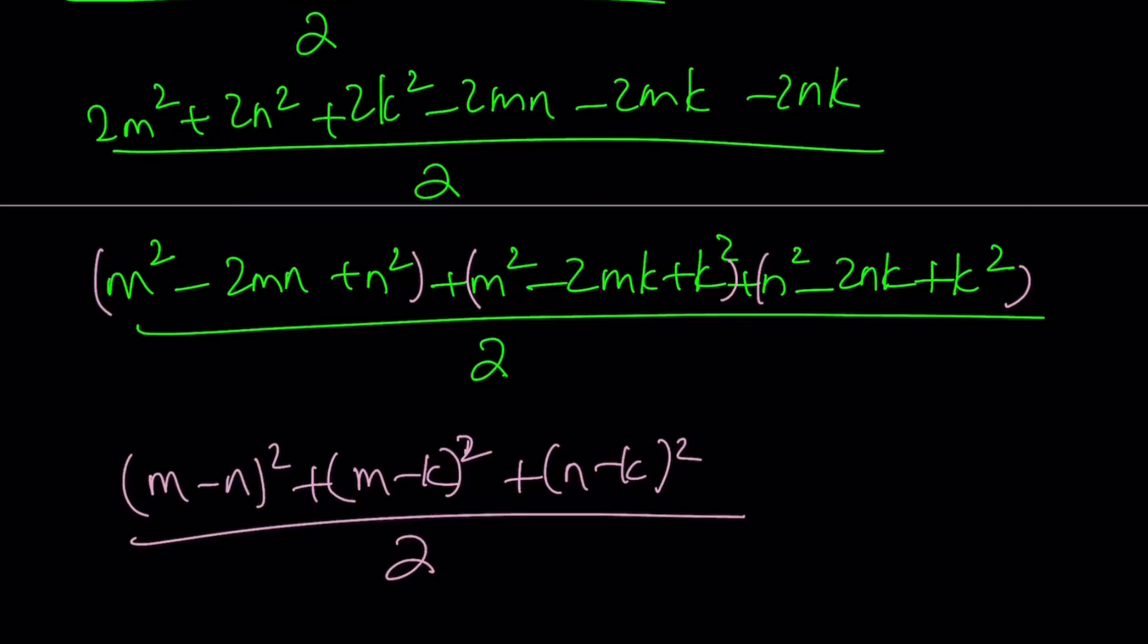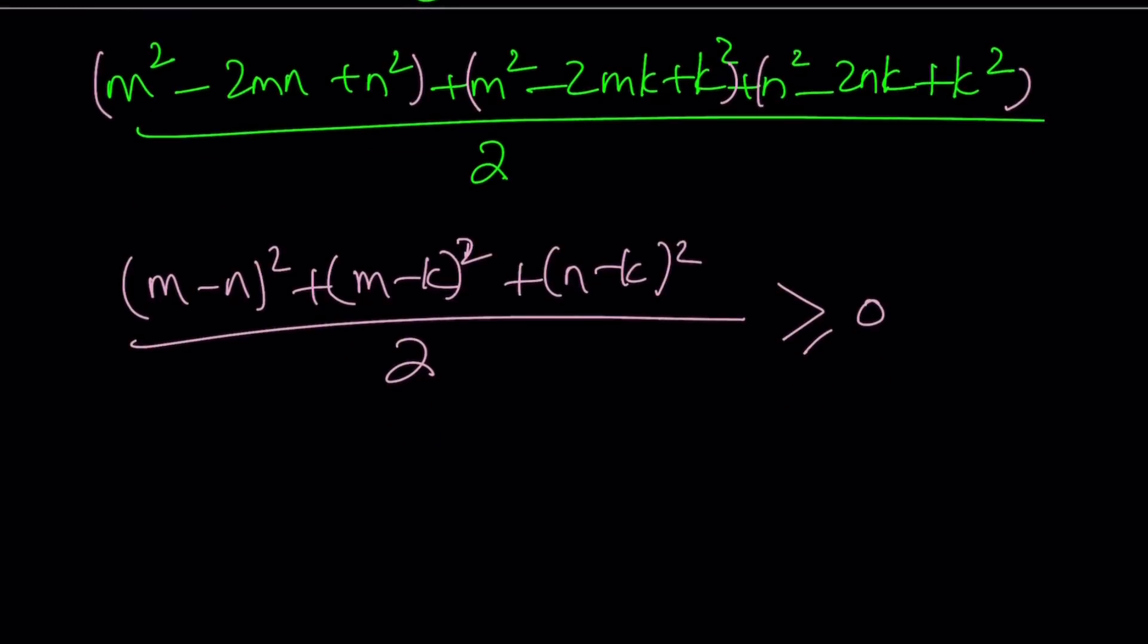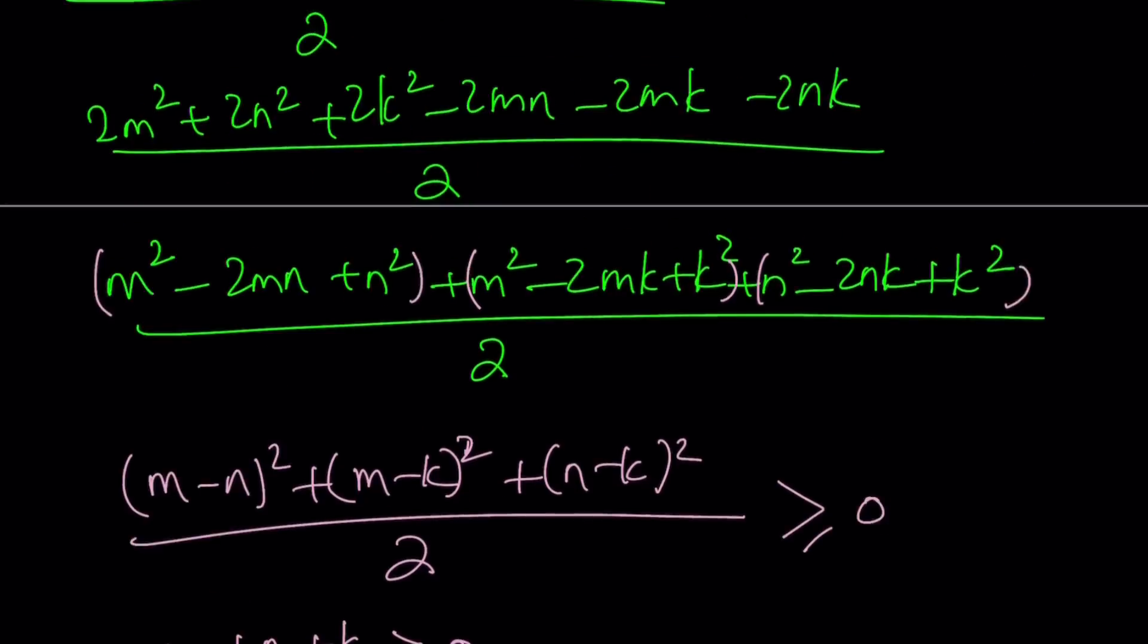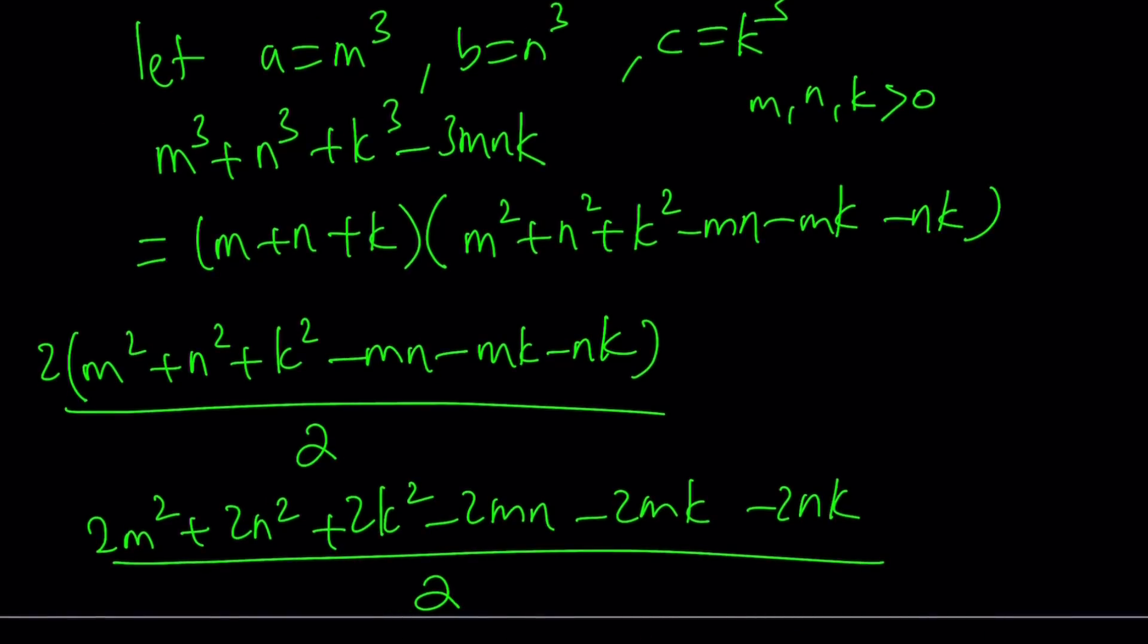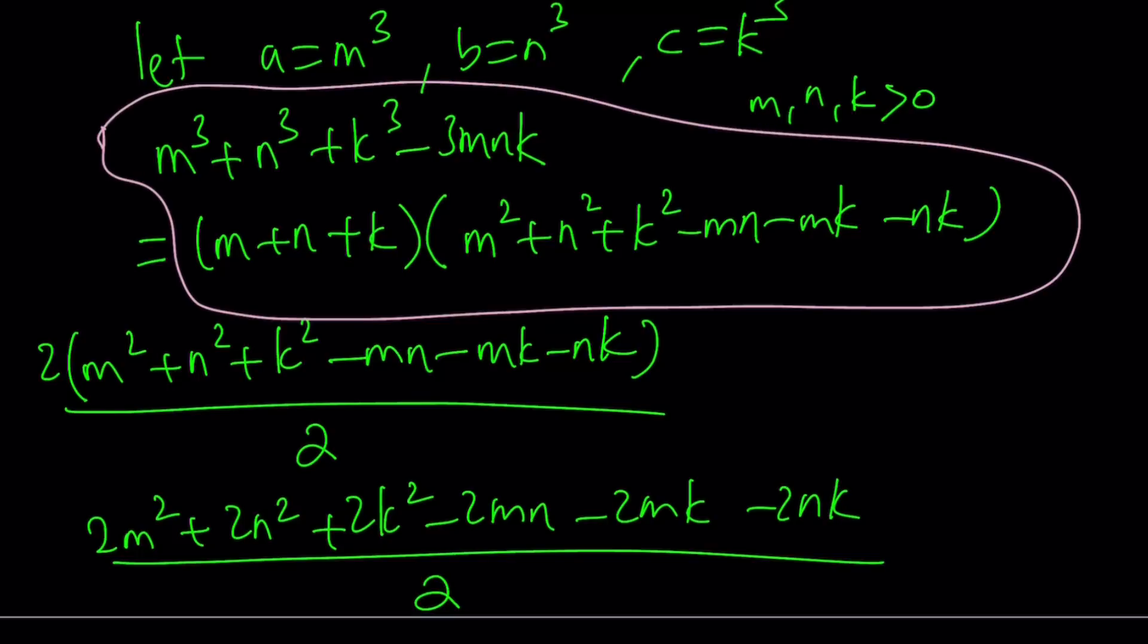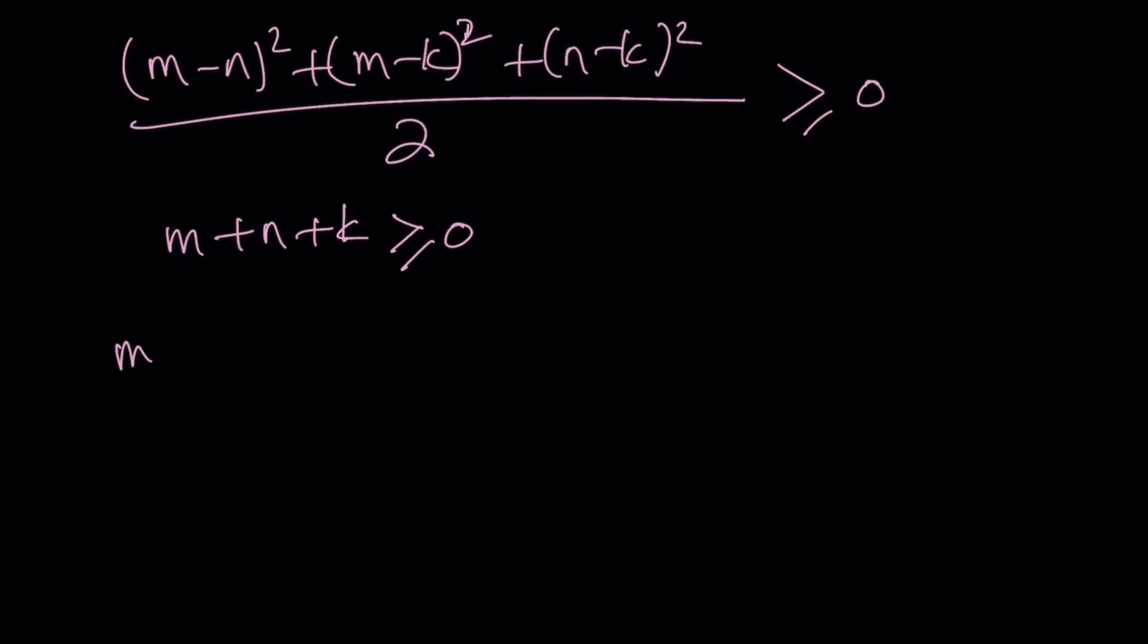So this expression is going to be greater than or equal to 0. And we also know that MNK is positive or greater than or equal to 0. Therefore, M plus N plus K is also going to be greater than or equal to 0. Now, take a look at this expression. We were able to factor this expression right here, the cubic. And both factors are greater than or equal to 0, which means the product, which is M cubed plus N cubed plus K cubed minus 3MNK, is also greater than or equal to 0.